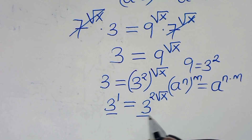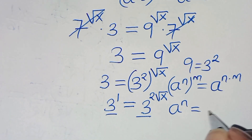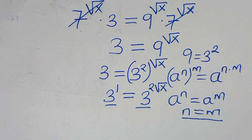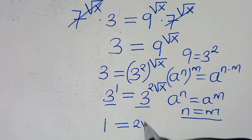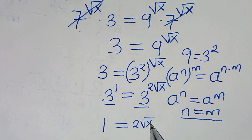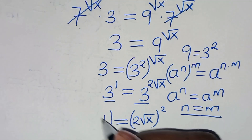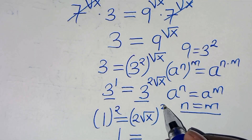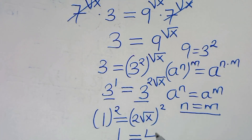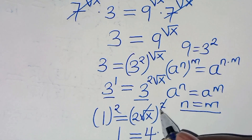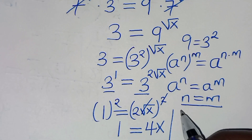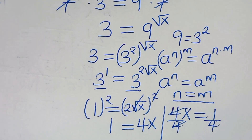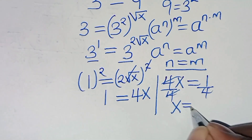Now the bases are common, so since a to the power of n equals a to the power of m implies that n equals m, applying this property gives us 1 equals 2 times square root of x. To solve for x, let's square both sides: 1 squared equals 1, and squaring 2 times square root of x gives 4 times x. This implies 4x equals 1, so dividing both sides by 4 gives x equals 1 over 4.